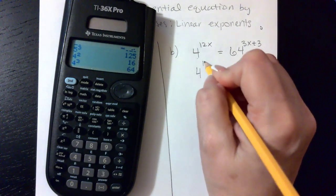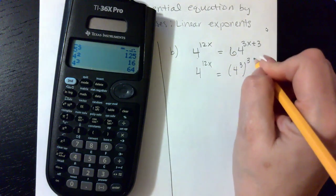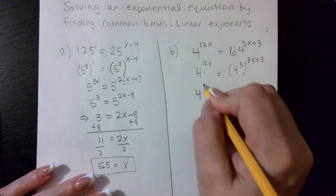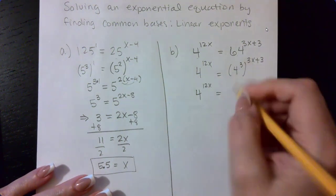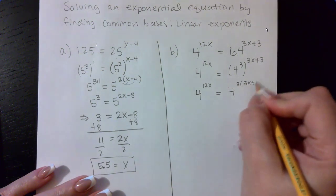Here we have four to the 12 X. Here we have four raised to the third power, but that's still raised to the 3 X plus three. So we have to apply our exponent rule that says an exponent raised to another exponent means you multiply those exponents.